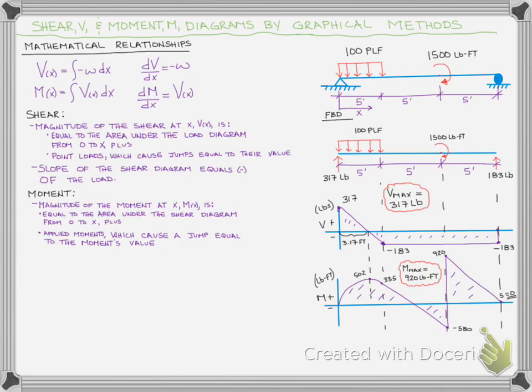To get the slope, you simply look at the shear. If the shear is constant, like from 5 to 15 feet, you're going to have a constant slope — a linear slope on your moment diagram. If your shear is increasing or decreasing, then you're going to have a parabolic shape, like we see from 0 to 5 feet. We'll do all this in detail a little bit later in the video.